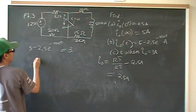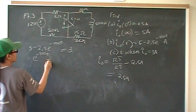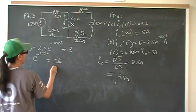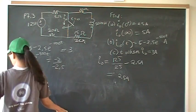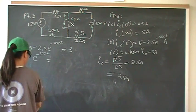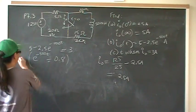Bring that over. So, bring that over, and that gives me E to the negative 500 T is equal to negative 2 over negative 2.5, which is 0.8.